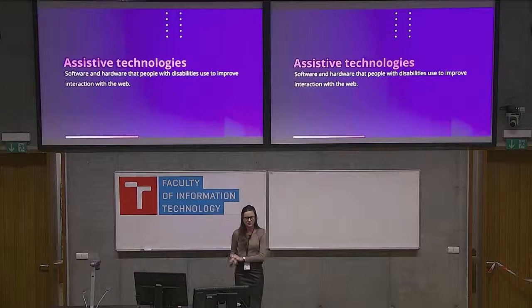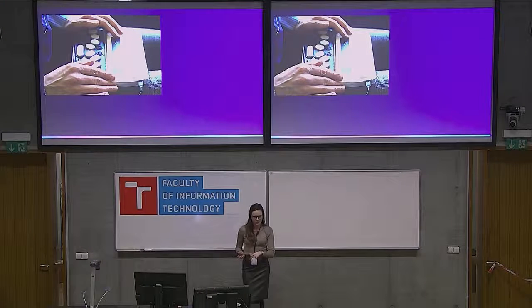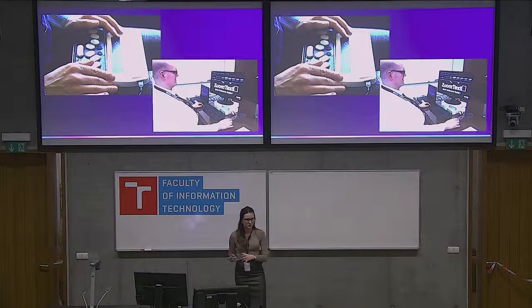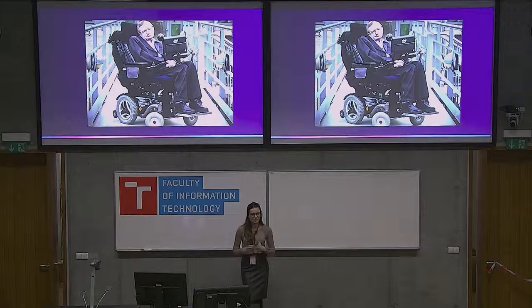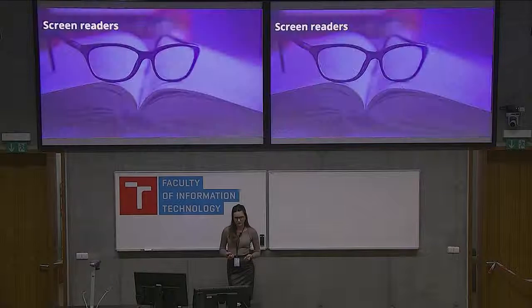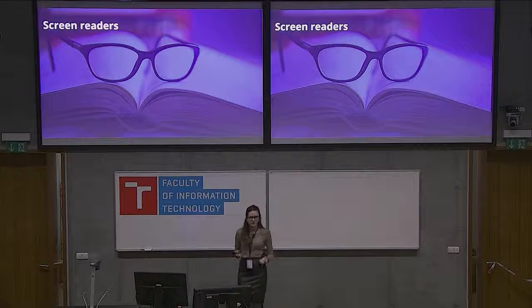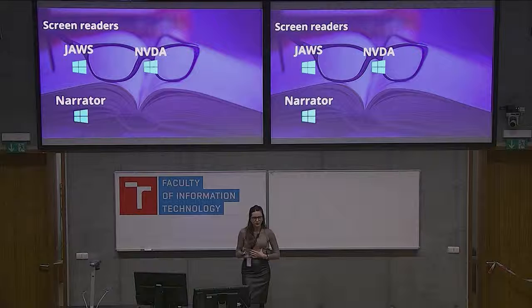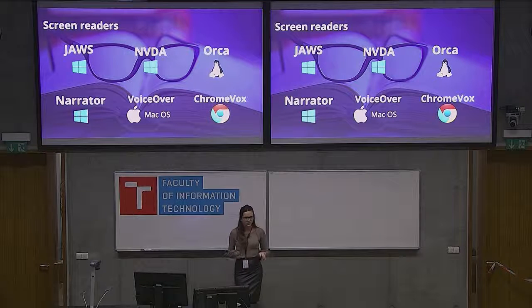People with disabilities use software and hardware to help them interact with the web — these are called assistive technologies. There is a wide range of them: Braille terminals for blind users, screen magnifiers for users with low vision, eye-tracking devices, specific touch screen devices. Stephen Hawking used a really broad range of assistive technologies. The most popular are screen readers — software programs that people install on their computers and that read aloud everything displayed on the screen. Popular ones include JAWS and NVDA for Windows, Orca for Linux, VoiceOver for macOS, and ChromeVox for Chrome, which works on any OS.